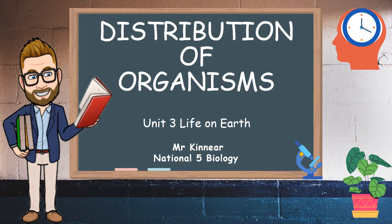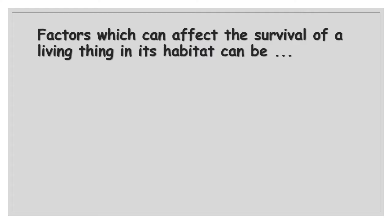Hello again, Mr. Kinnear here with another video lesson for National Five Biology. We're on Unit Three: Life on Earth, and today's lesson is about distribution of organisms. In the last lesson we talked about biodiversity, which is the variety of life within a very small environment or across the whole planet. Within the planet we've got a variety of different ecosystems which have different conditions and therefore different organisms. We're going to start to talk about the factors that affect the survival of a living thing in its habitat.